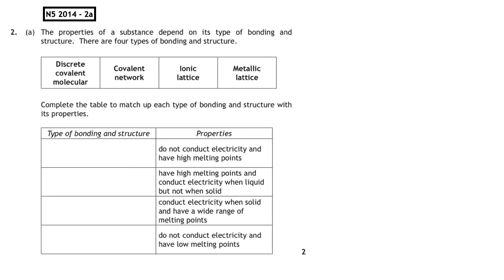This past paper question is from the National 5, 2014, written 2A. The properties of a substance depend on its type of bonding and structure. There are four types of bonding and structure. Discrete covalent molecular, covalent network, ionic lattice and metallic lattice. Complete the table to match up each type of bonding and structure with its properties.